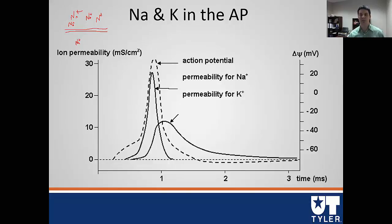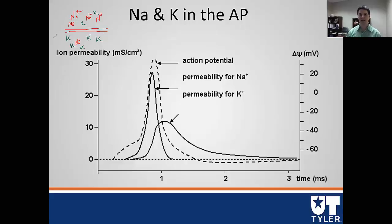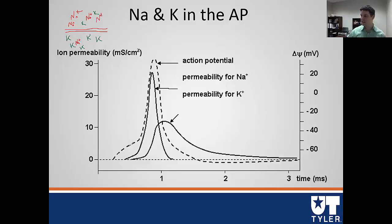For our other key ion, potassium, we actually have a lot of potassium inside the cell and a relatively small amount outside. This is the resting membrane potential setup. The resting membrane potential for a neuron is around negative 70 millivolts — it's different for each cell type, but negative 70 is a good baseline for neurons.